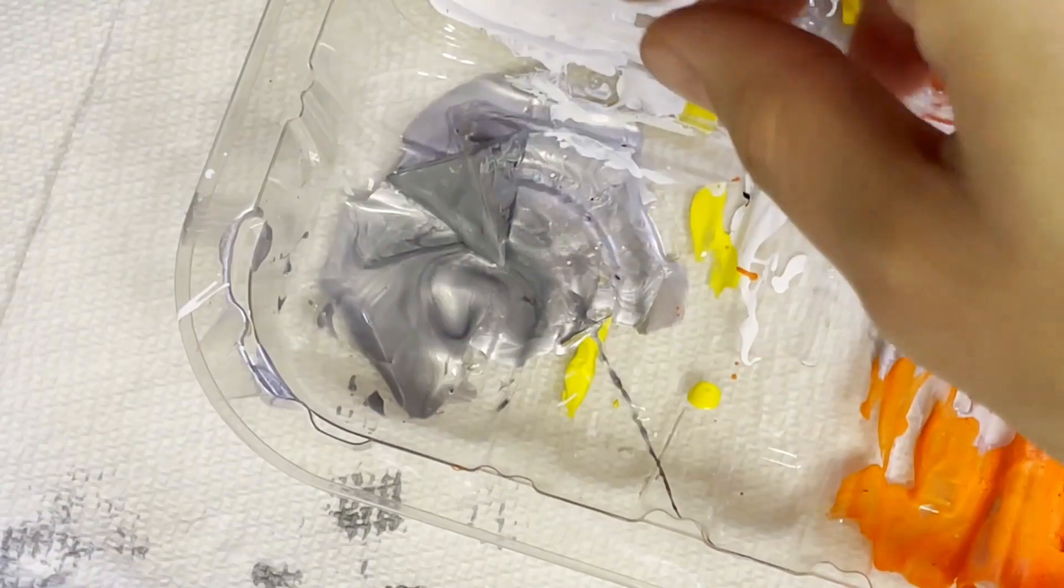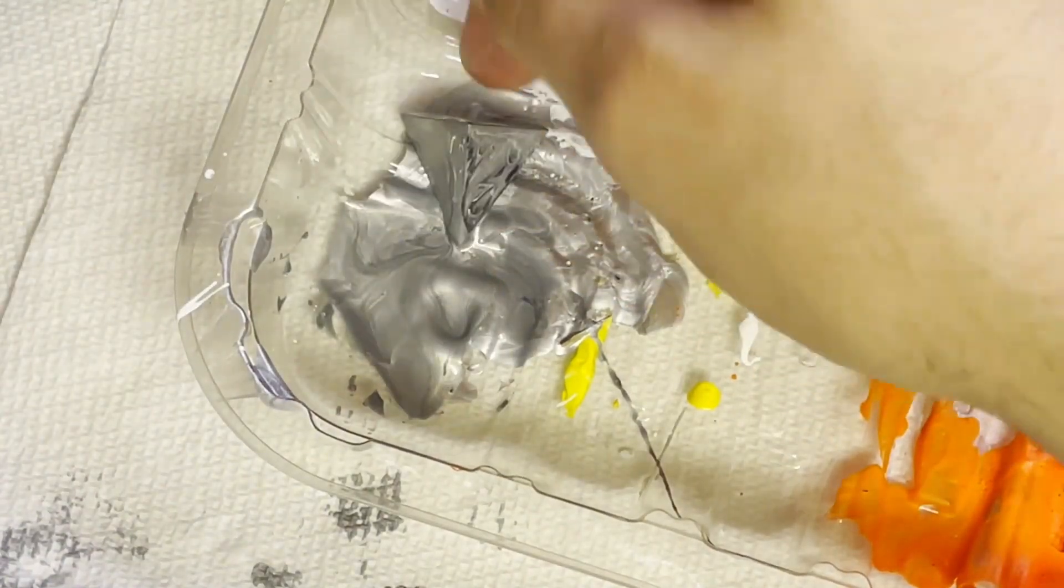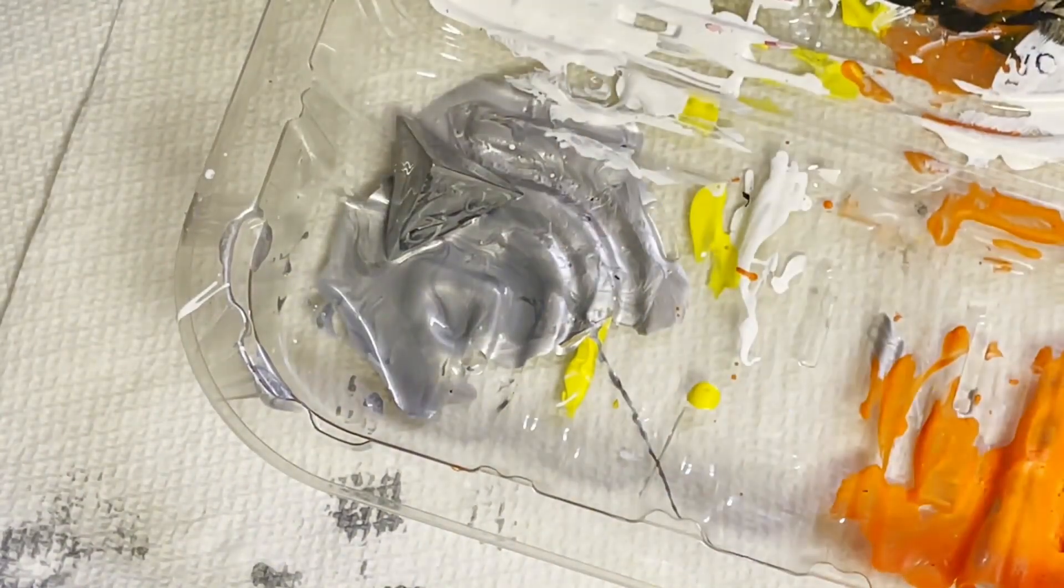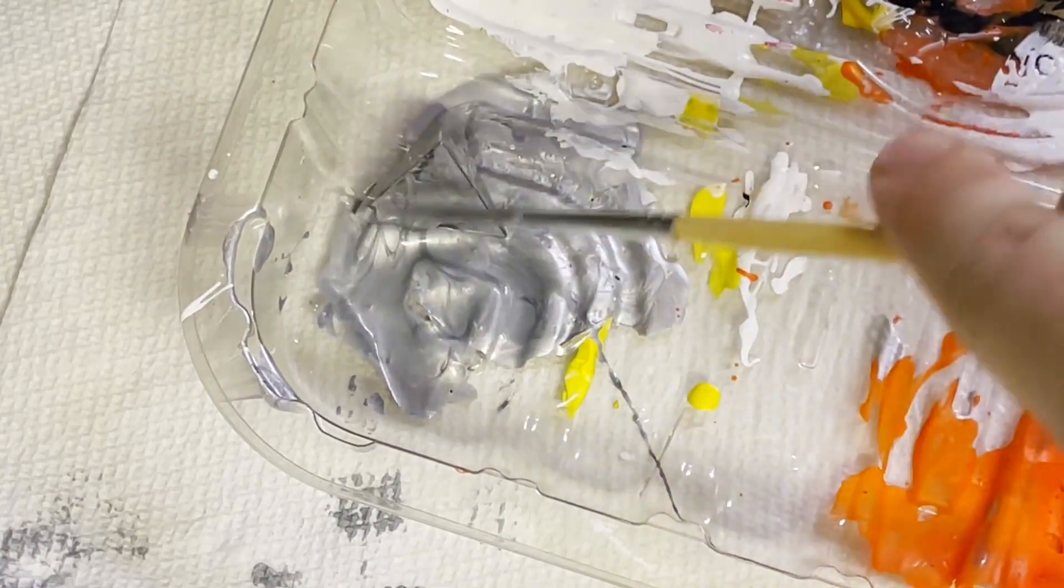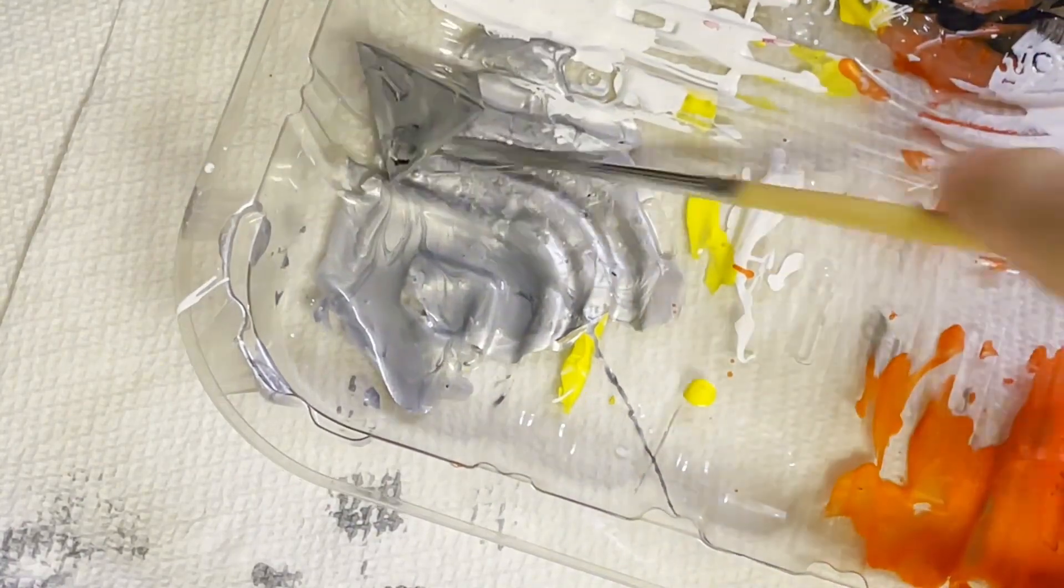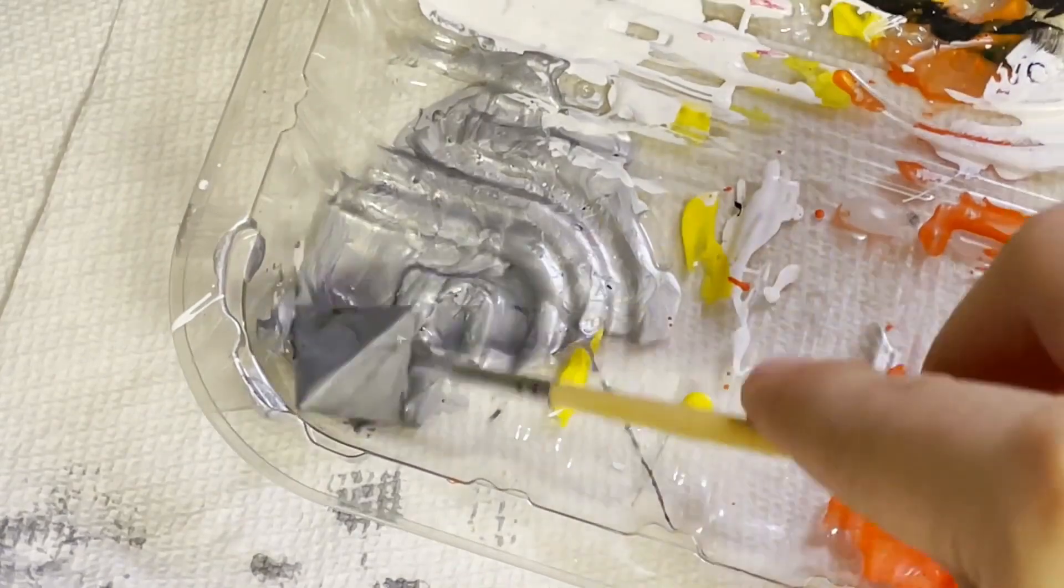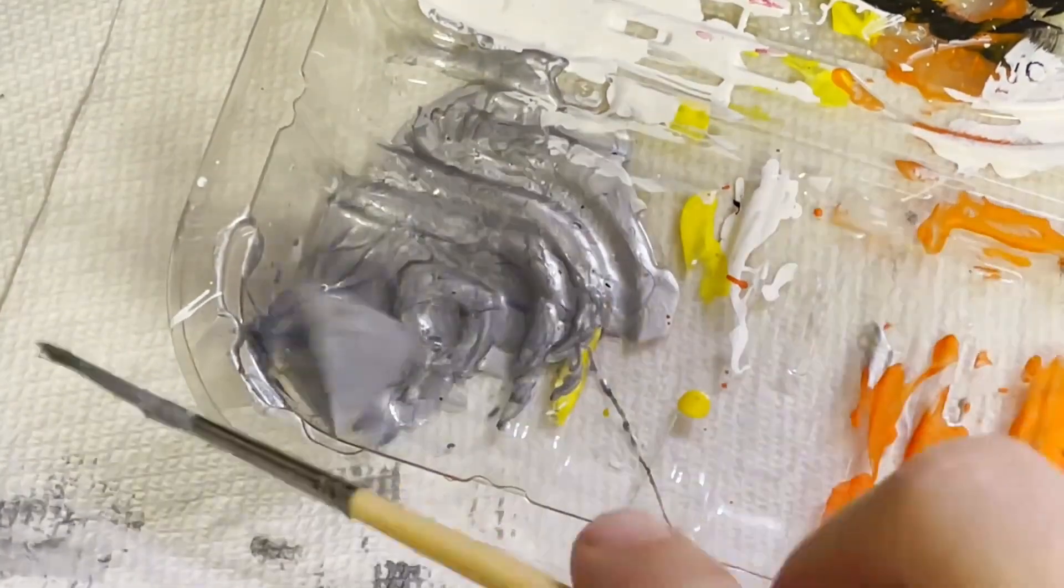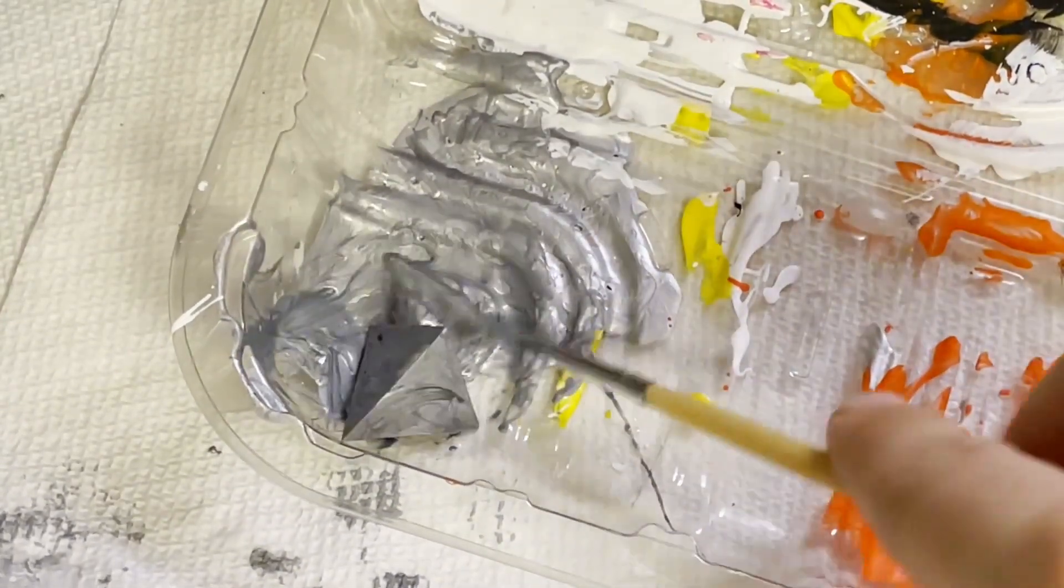The most simple method of inking is as you see, all you do is just drop it into a bunch of paint, cover it all over, and then clean it off. Very simple.